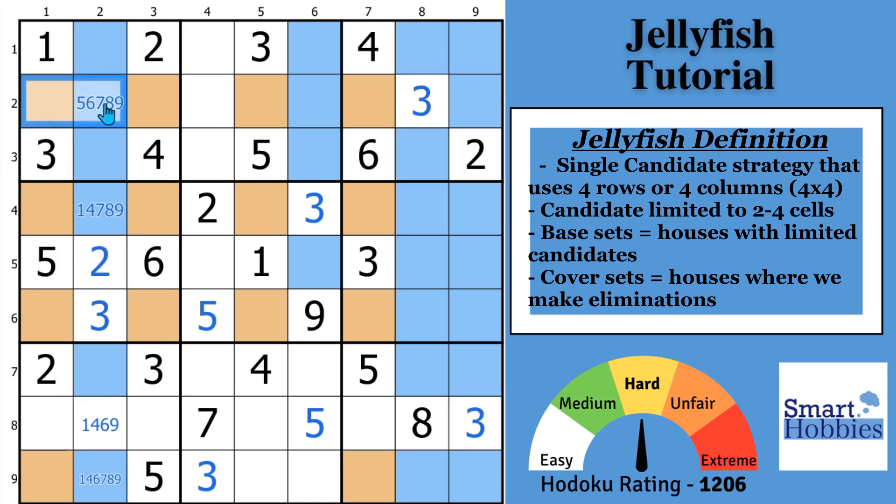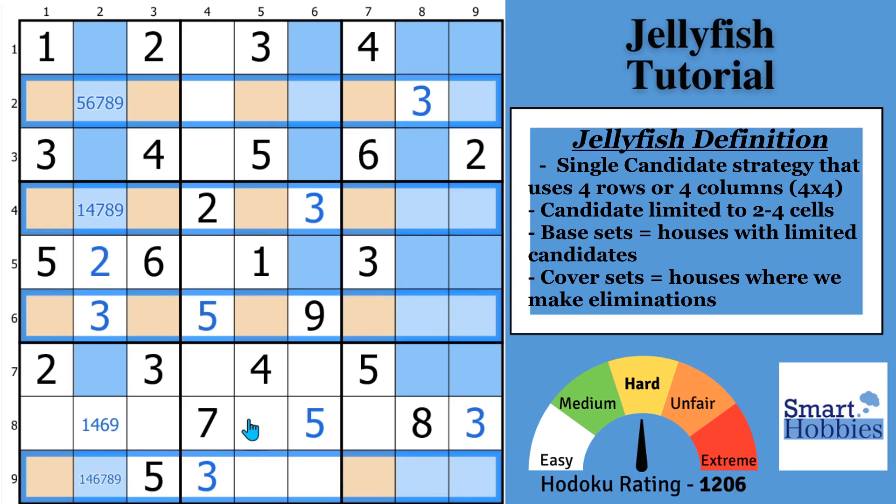And then our cover sets are where we can make the eliminations. You'll notice that we have more than 4 sevens in these rows. Everything in blue in those rows we can eliminate. It's not a possibility. You're like, well, how do you know that, Timberlake?